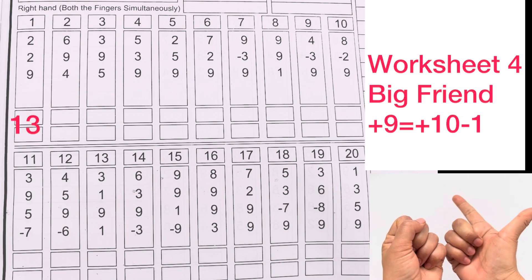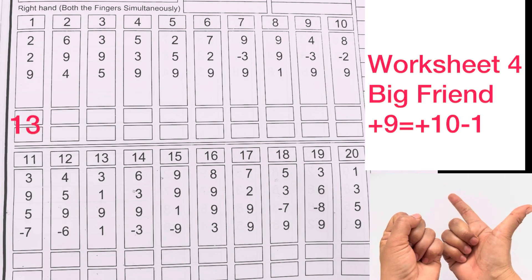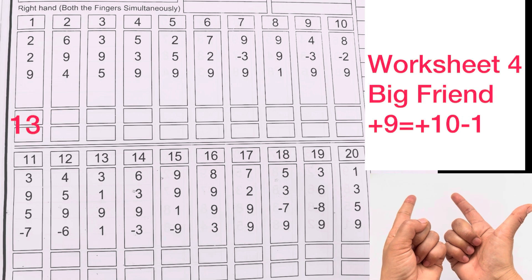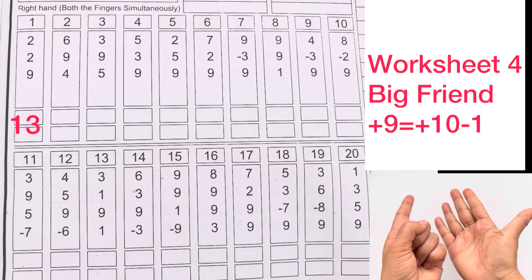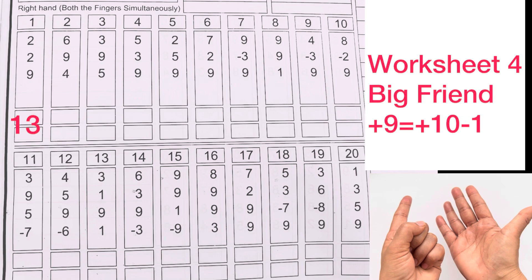6 plus 9, plus 10 minus 1, plus 4. Answer is 19.